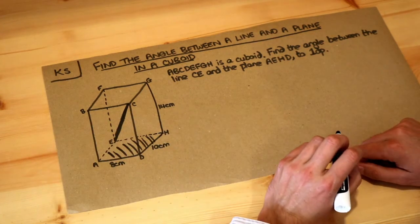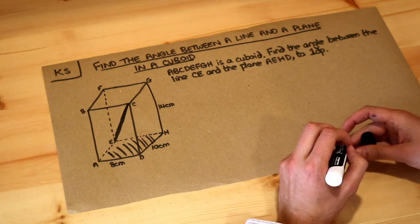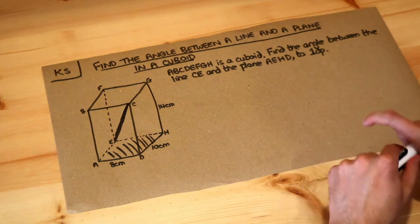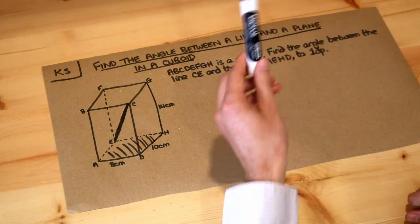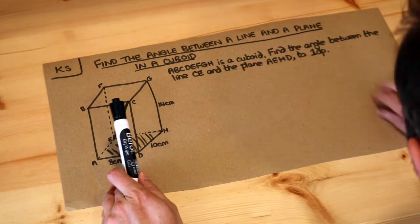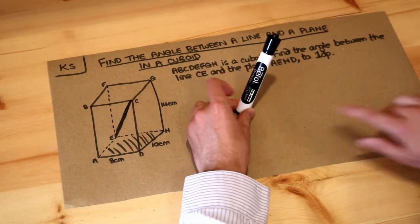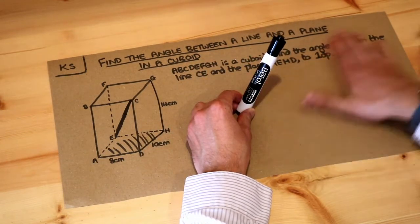So we want to find that angle. Now whenever you want to find the angle between a line and a plane, I use what's known as the drop method. So let's say my pen is the line and the plane is this piece of paper, and I want to find the angle between this line and this piece of paper, the plane.